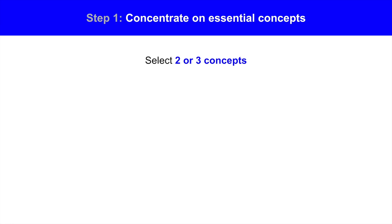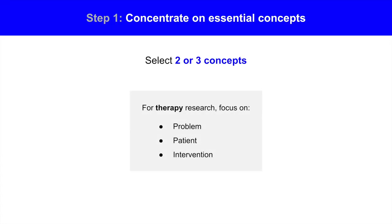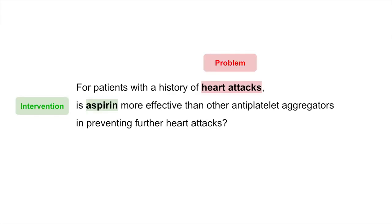Step 1: Concentrate on the essential concepts of the research question. Select two or three concepts for focus — we run a broader search and get a bigger picture of the research space when we start with fewer ideas. For therapy research questions, focus on the problem, patient, and intervention concepts. In our question, the problem is heart attacks and the intervention is aspirin.